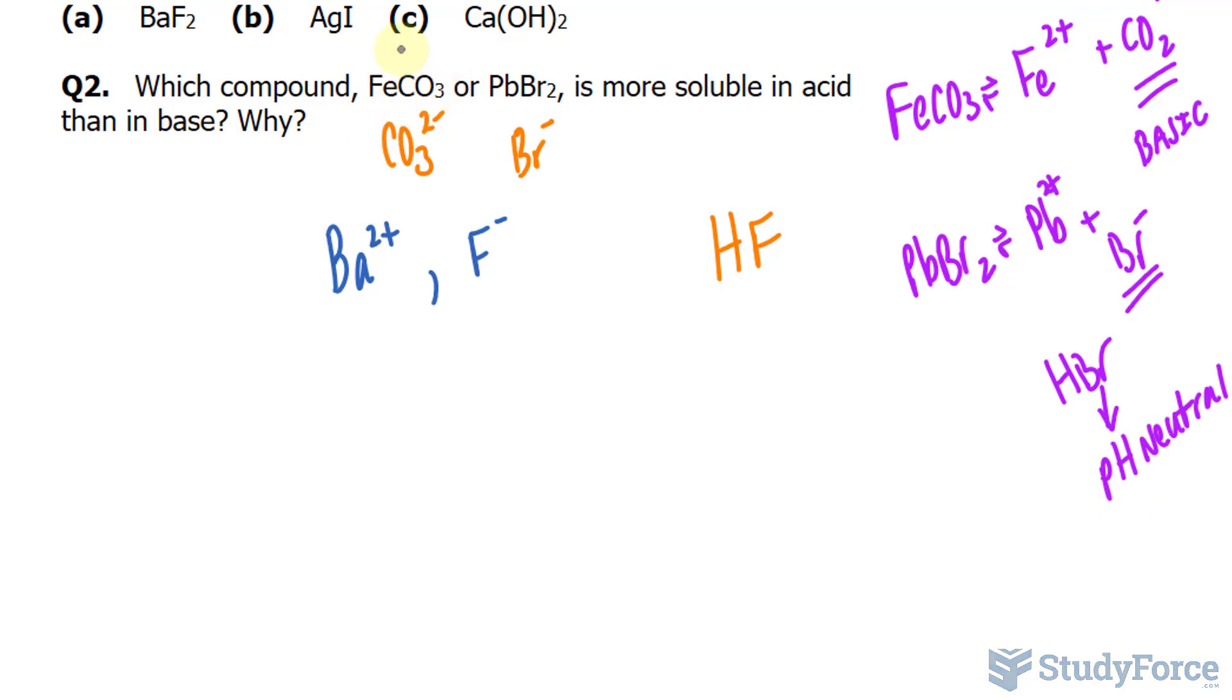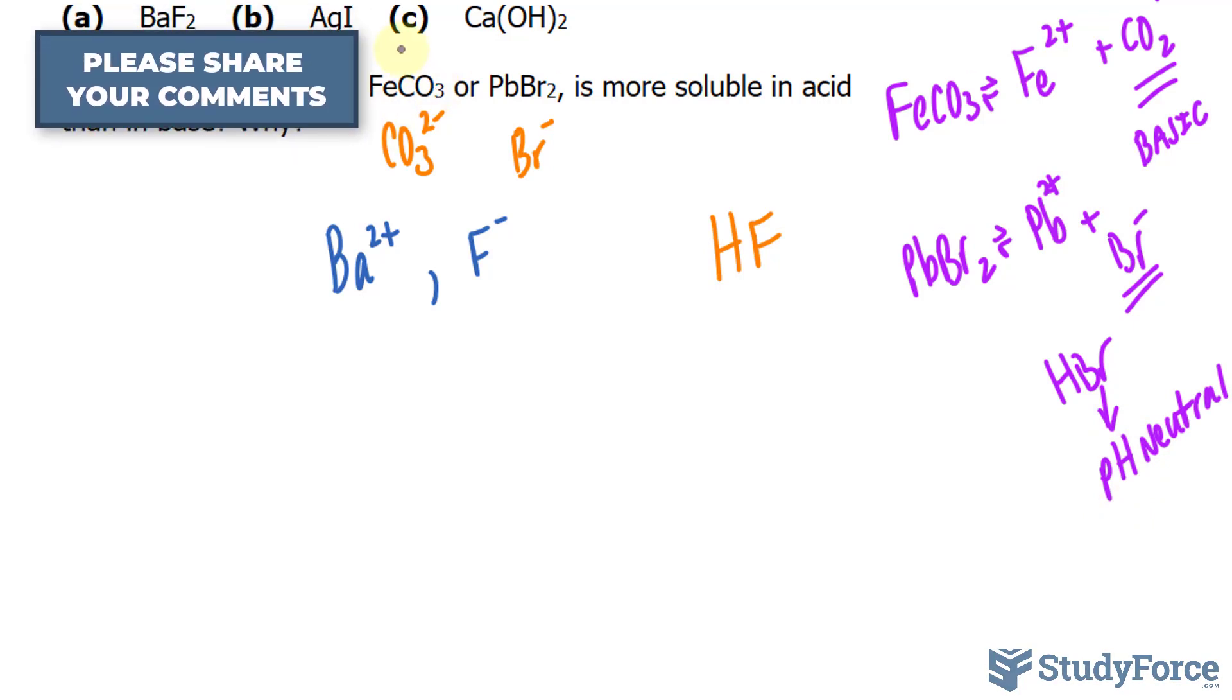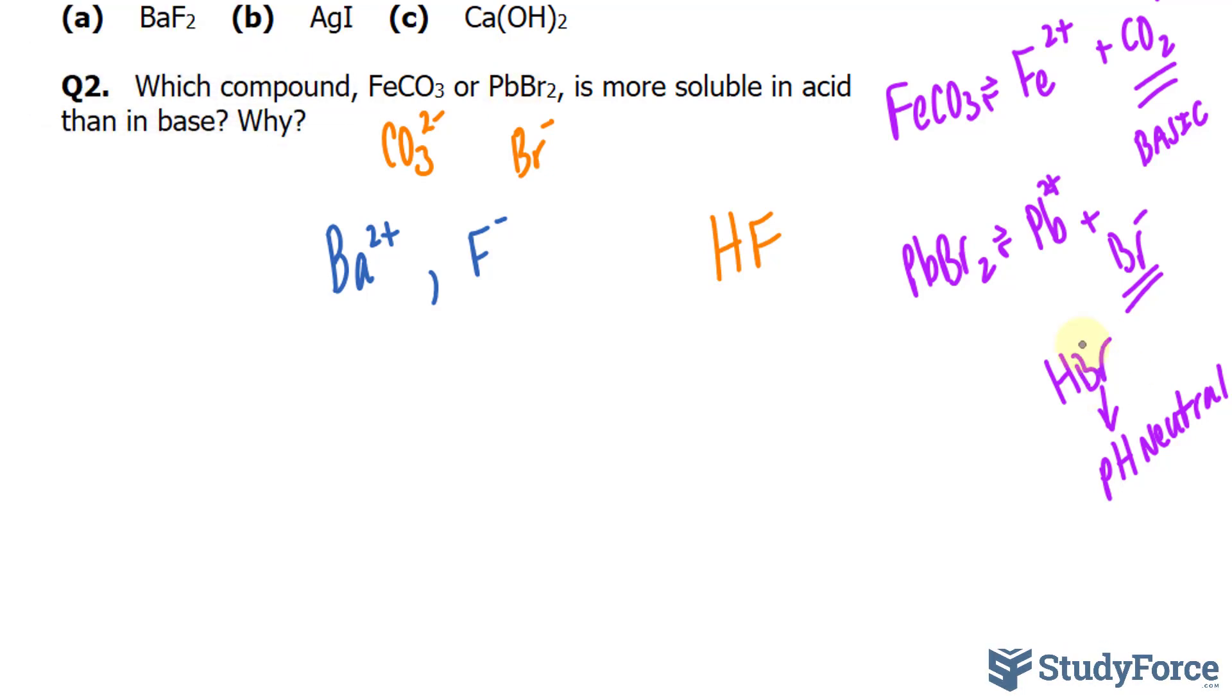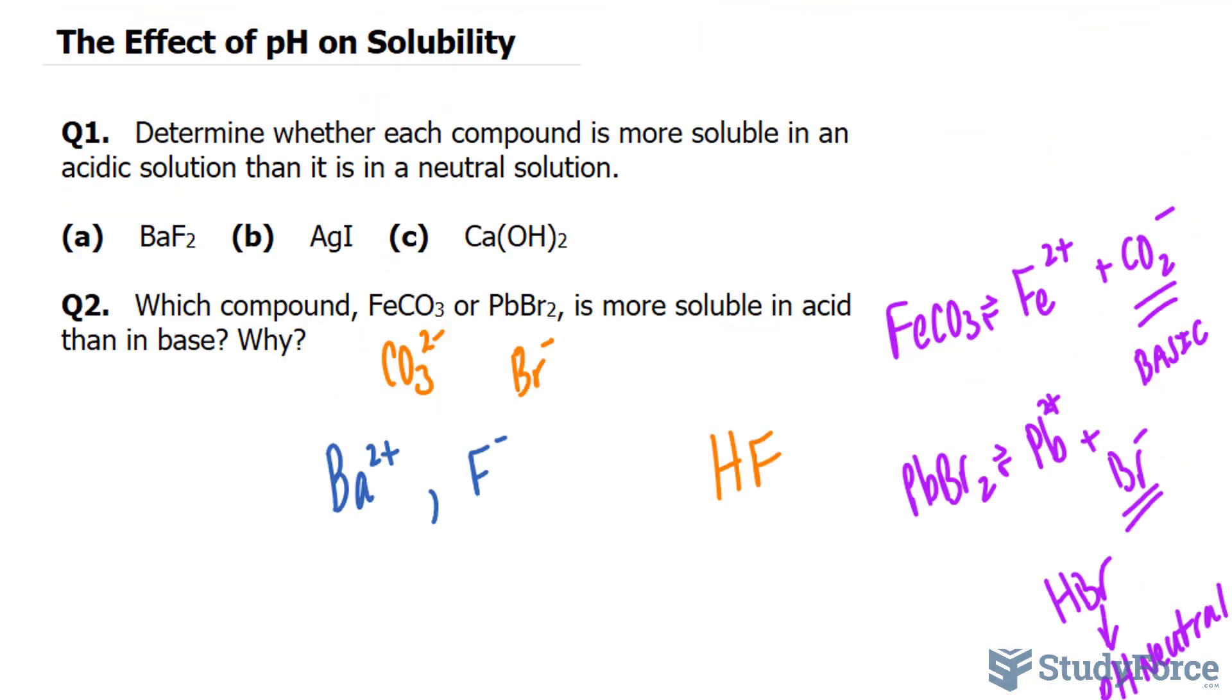That means this molecule, FeCO3, is more soluble in an acid than is PbBr2, given that its anion is pH-neutral. And there you have it. That is how you determine the effect of pH on solubility.